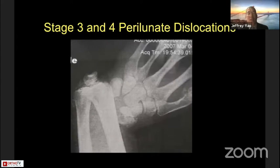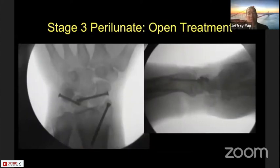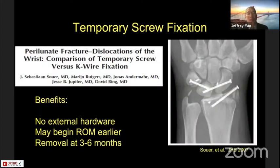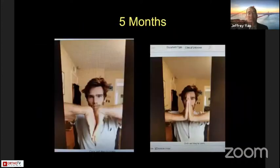Stage 3 perilunates are always dramatic appearing, but remember — as long as the lunate is within the lunate fossa, this is not a Stage 4. In this case, we elected to use temporary screw fixation rather than K-wires. This is different from the Rascel procedure where the screw is permanent; these are temporary, removed at about three months. I learned this from Jesse Jupiter's group at Mass General. The benefit over K-wires is that you can allow early motion — about two weeks after surgery — maintaining some carpal motion until screw removal.